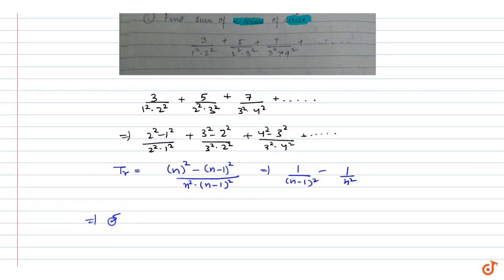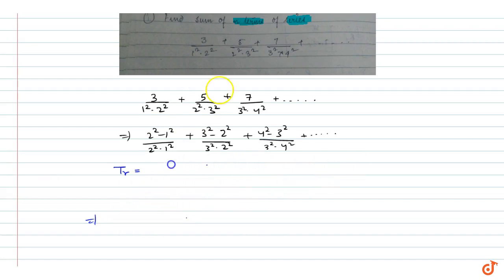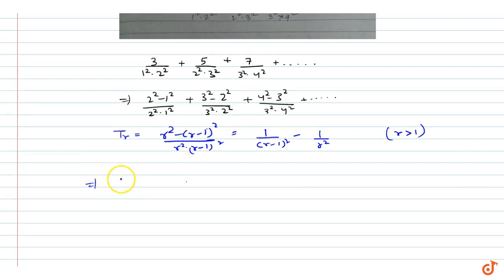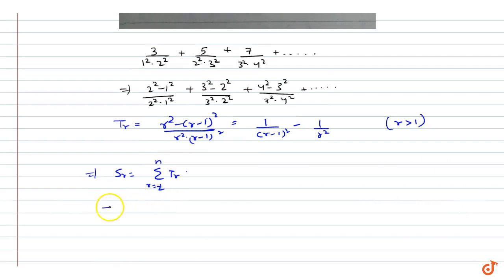So the sum of the series, S_r, equals the summation of t_r when r goes from 2 to n. We can write the summation of 1 upon (r minus 1) square minus 1 upon r square, from r equals 2 to n. Note that r should be greater than 1, otherwise this will be an indeterminate value.